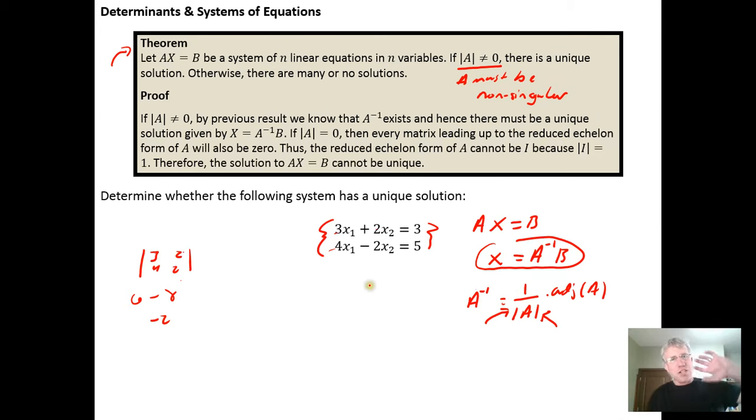If the determinant is equal to zero, then the other two possibilities must be in place. A linear system of equations has three possibilities. Either that solution is unique, and the unique solution happens when we get a determinant that's non-singular or not zero.